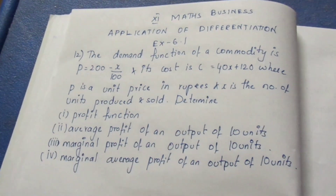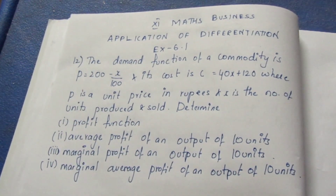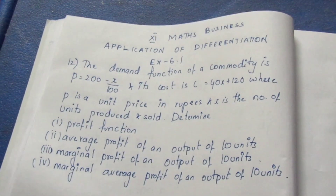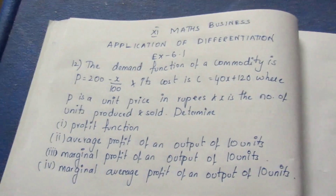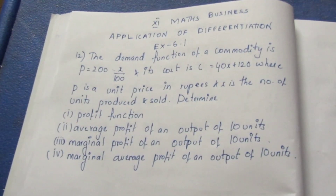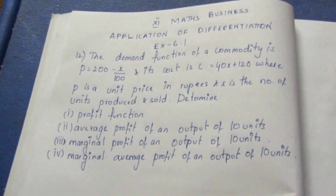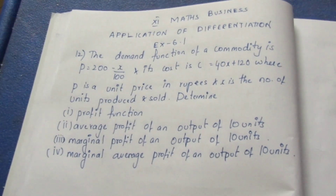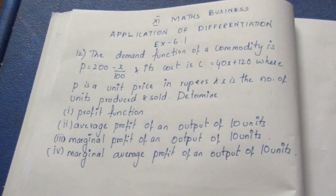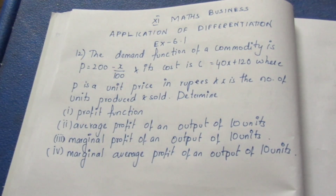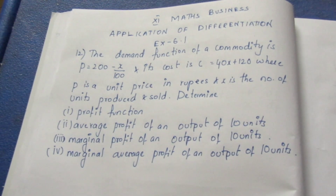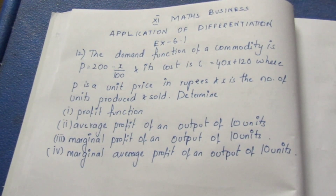Hello viewers, I am Ithli. In the 11th Business Math, application of differentiation exercise 6.1, question 12, we will solve this sum. The demand function of a commodity is P equal to 200 minus x by 100. Its cost is C equal to 40x plus 120, where P is the unit price in rupees and X is the number of units produced and sold.